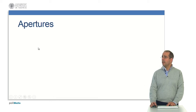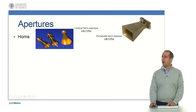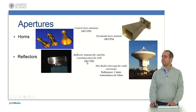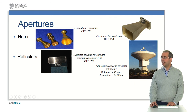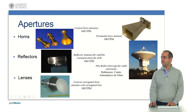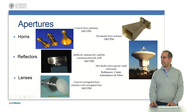Finally, we have the aperture antennas. Here, horn antennas — an example of different conical horn antennas, and here an example of pyramidal horn antennas. Reflector antennas — here for example a reflector antenna for satellite communication, and here a 40-meter radio telescope for radio astronomy. Finally, lens antennas — here for example a conical corrugated horn antenna with corrugated lens.